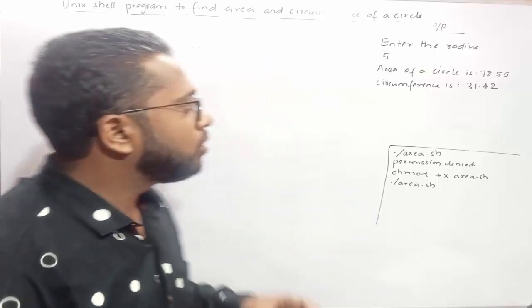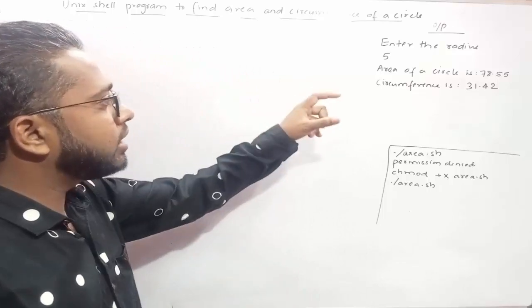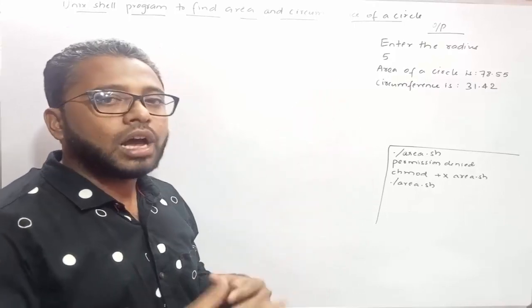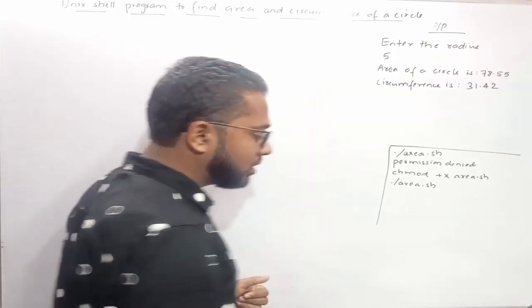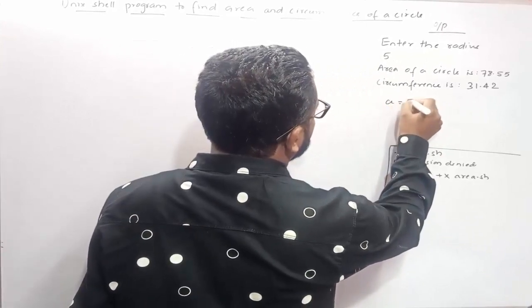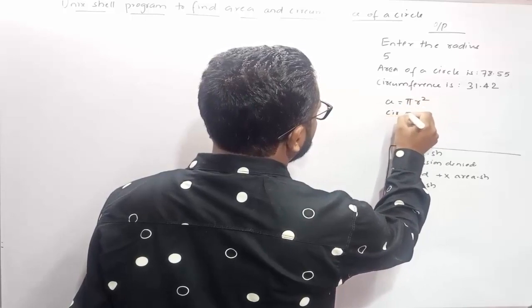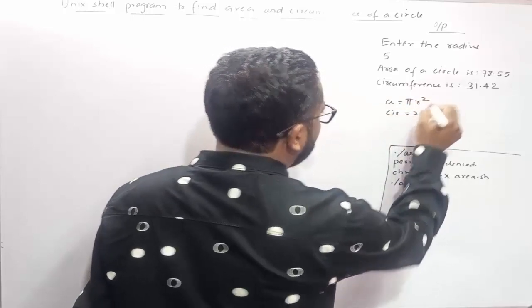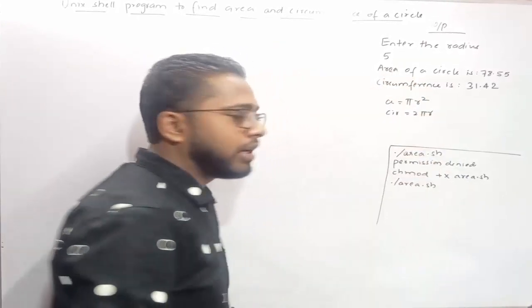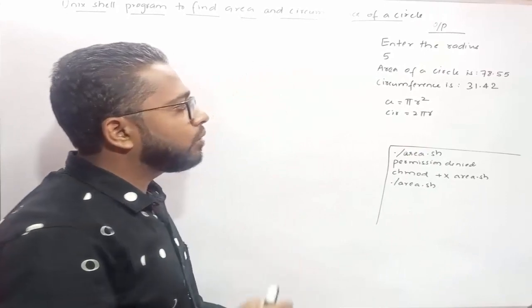Now let us start our discussion. When this program gets executed it asks the user to enter the radius. Let's suppose the user enters 5, then after performing some calculation using the formula — area is pi r squared and circumference is 2 pi r — our shell program calculates the area and circumference of a circle.